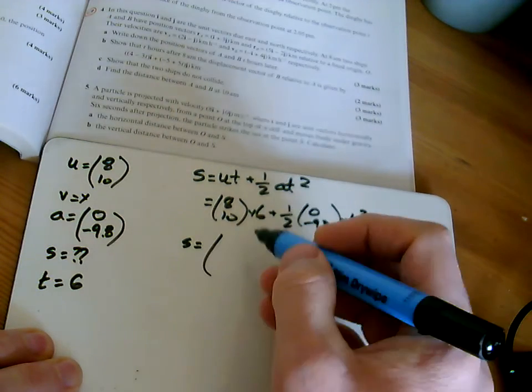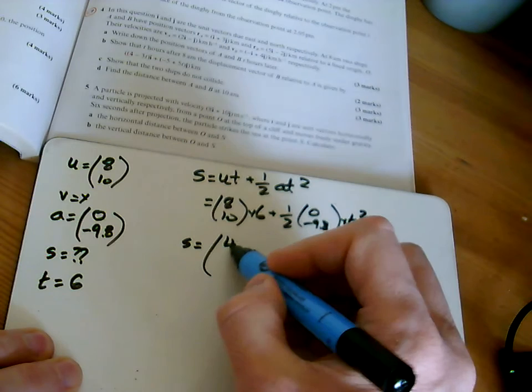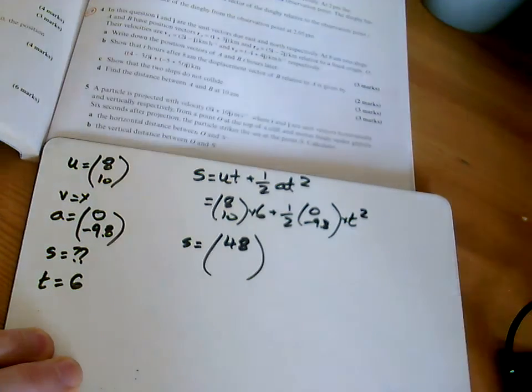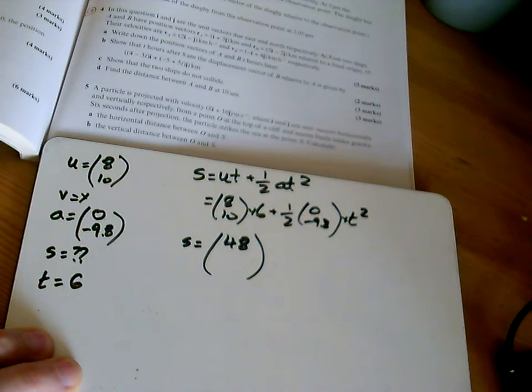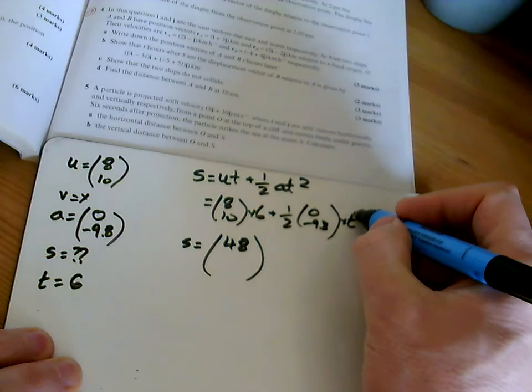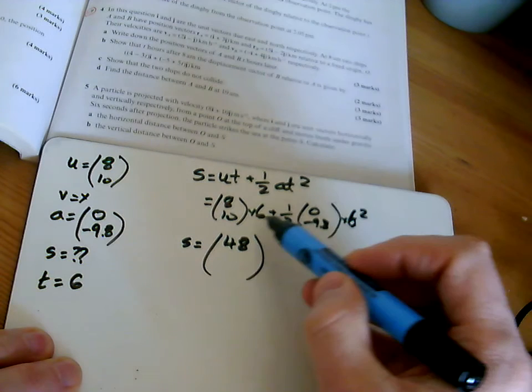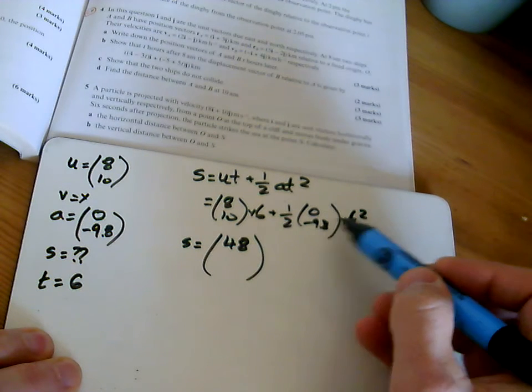...work out all of that, well the first bit's just 6 times 8 is 48. And the second bit is going to be 60 take away 9.8 times by—oh sorry, that's not t there, is it? That's 6. So 60 take away 9.8 times by 6...